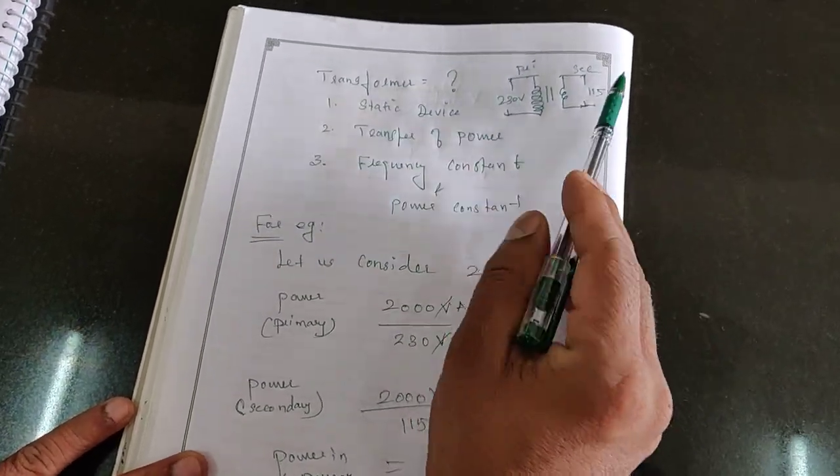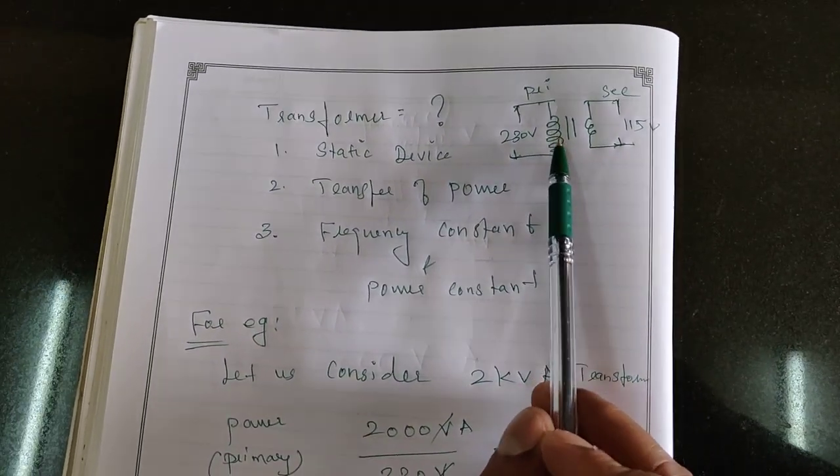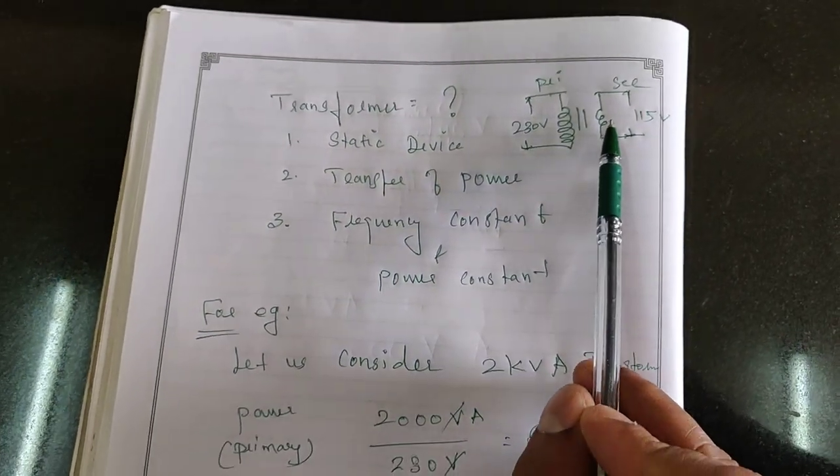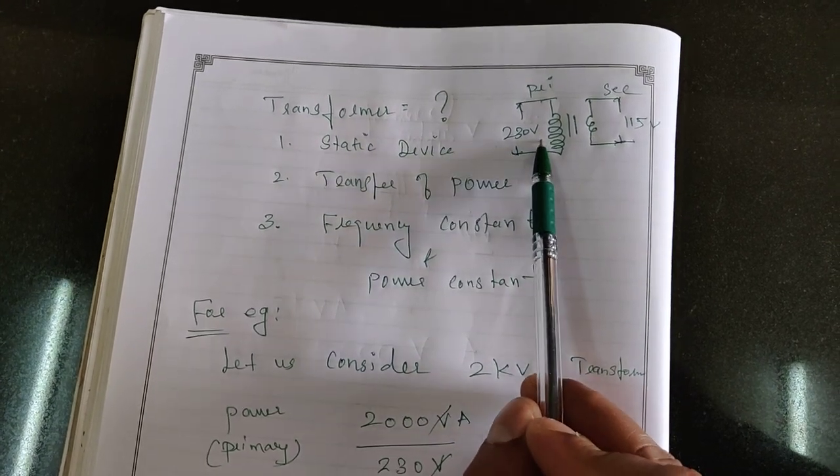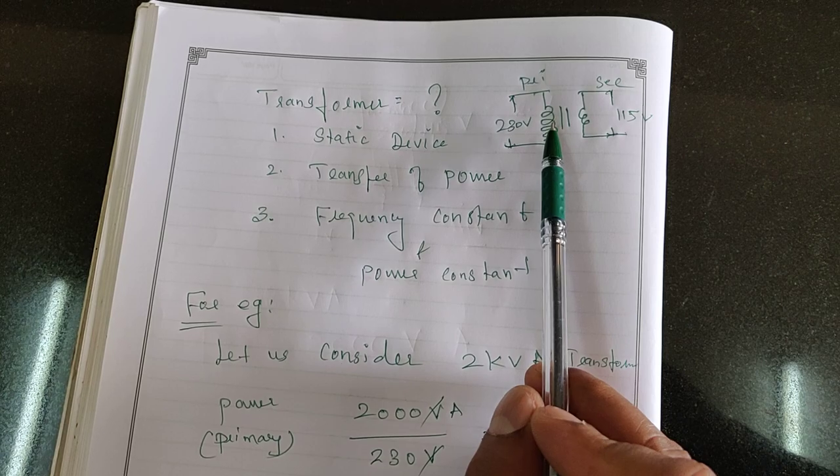This is the symbol of a transformer where primary side we have the coil, the number of turns in the primary is higher and number of turns in the secondary is lower. It means it is the step down transformer. Similarly, we can have step up transformer also.